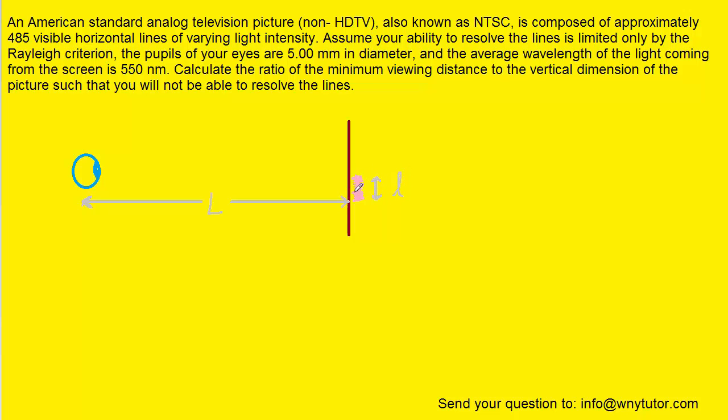Actually within that image we were told that there are 485 visible horizontal lines. So what that means is that this picture is made up of 485 horizontally oriented lines and all of those lines make up the picture.